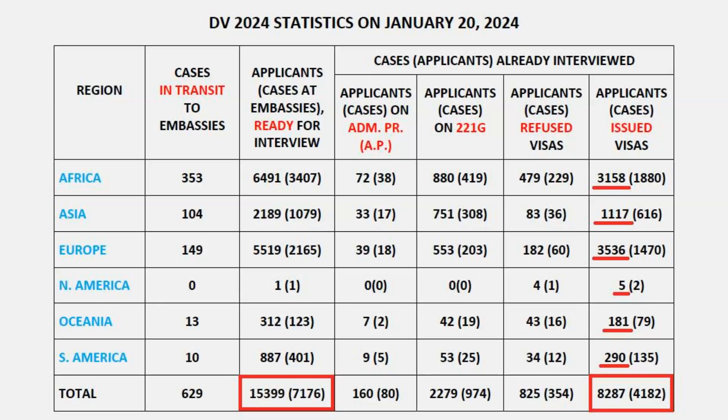As most of those 15,399 applicants will be issued visas, if you have not yet received your interview notification, the visas actually left for you are far less than 47,000. These applicants include those still to be interviewed in January, all of those in February, and most of those in March. Interview notifications continue to be sent out for March, so if your case number falls within the indicated range for your region, continue to look out for your notification — it could show up at any time, provided your case has reached the end of your embassy queue.